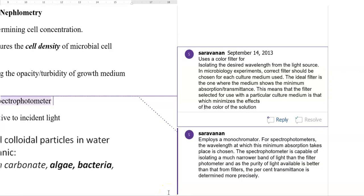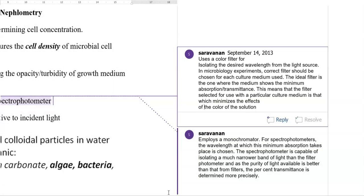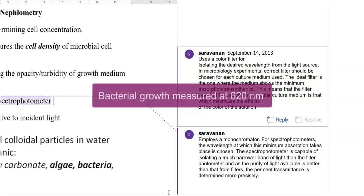First, we look at points related to colorimetry. It uses color filters for isolating different wavelengths from the light source. In microbiology experiments, the correct filter should be chosen for each culture medium. The ideal filter is one where the medium shows minimum absorption or transmittance, meaning the filter minimizes the effects of the color of that solution. In general, for measuring bacterial growth, a 620 nanometer wavelength is commonly used.